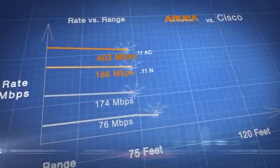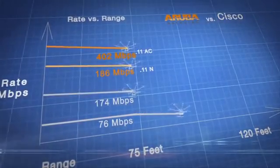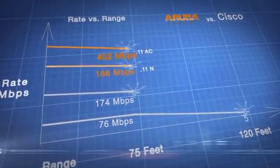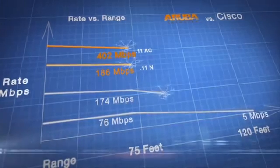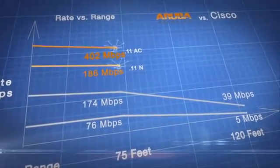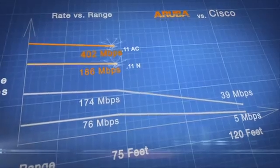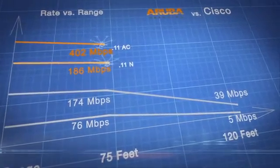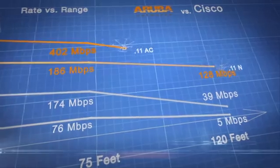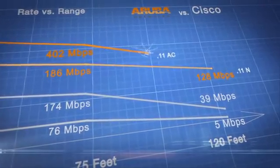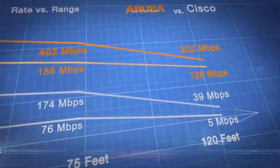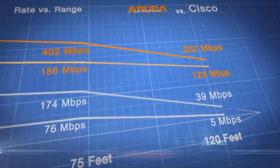But at the farthest distance — 120 feet — the Cisco access point dropped like a rock to only 5 megabits per second for the 11n device and 39 megabits per second for the 11ac device. Aruba maintained a throughput rate of 128 megabits per second for the 11n device and 202 megabits per second for the 11ac device.